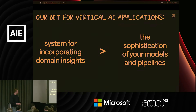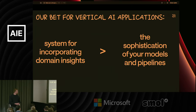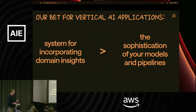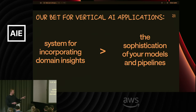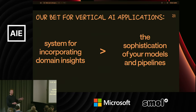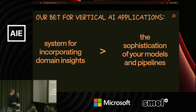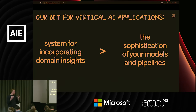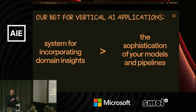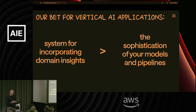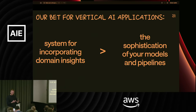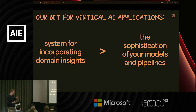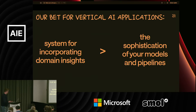When it comes to vertical AI applications, the system you build for incorporating your domain insights is far more important than the sophistication of your models and pipelines. The limitation these days is not how powerful your model is or whether it can reason to the level you need — it's more whether your model can understand the context in that industry for that particular customer and perform the reasoning it needs to. The way you enable that and iterate quickly with customers is by building a system around it. There are various components to that, and that's what I'm going to talk about.